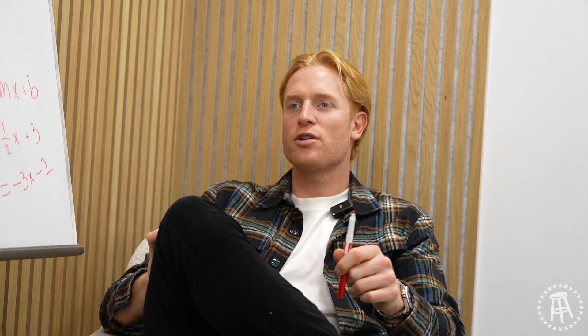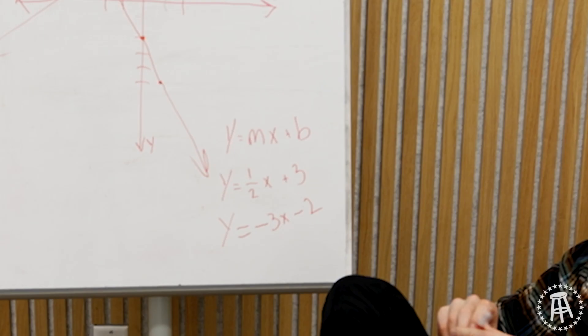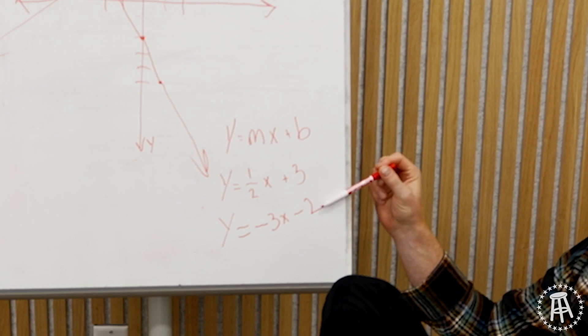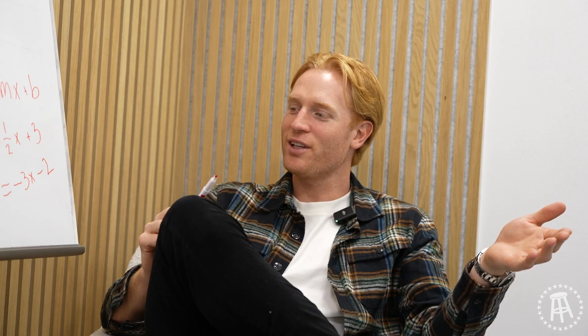If I asked you to draw me a line that was parallel to this line, what would you know to be true about the equation for that line? One of the numbers is the same. What number? The slope. Excellent. Really good, Dana. I know. I'm a math guy. My mom was a math teacher.